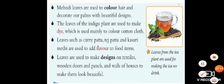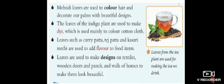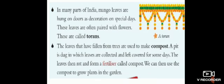Leaves are used to make designs on textiles, wooden doors, panels, and walls to make them look beautiful. In the picture you can see tea leaves used to make tea. In many parts of India, mango leaves are hung on doors as decoration on special days, often paired with flowers. These are called torans. On auspicious days such as marriages, functions, or festivals, we tie torans to our door hangings using mango leaves.